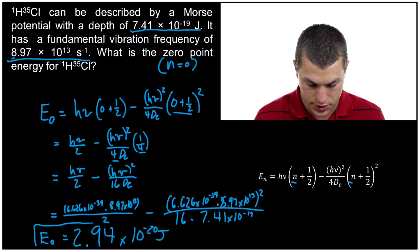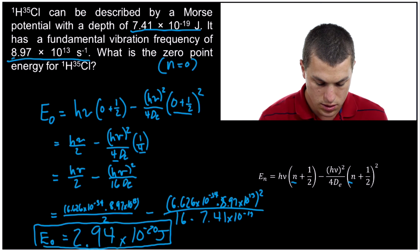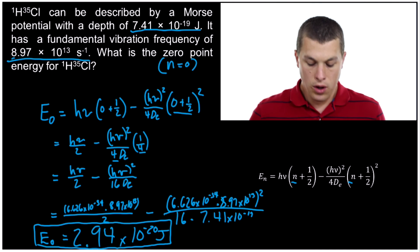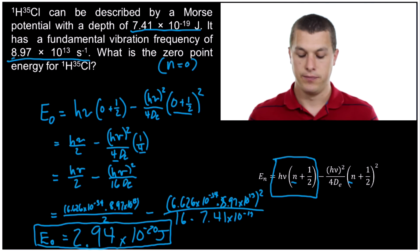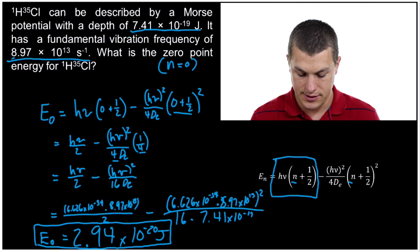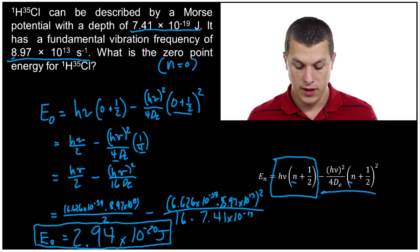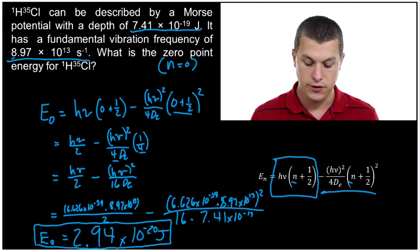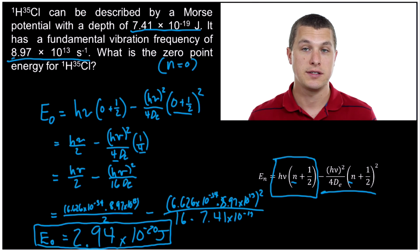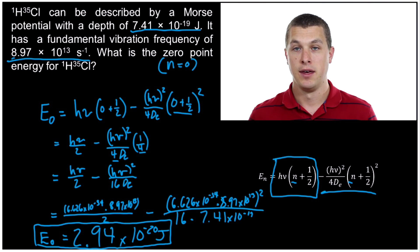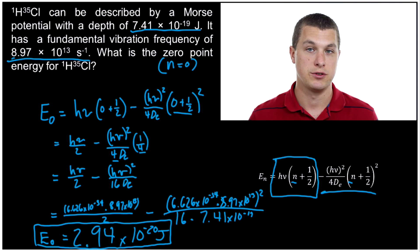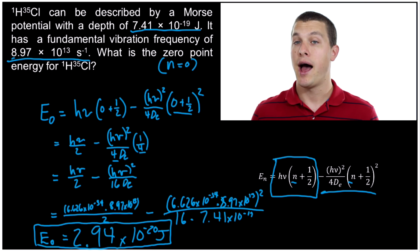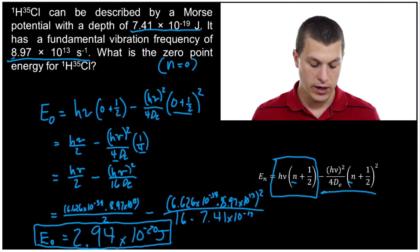That's the zero point energy of HCl modeled with the Morse potential. Note that the first part of the equation is actually just the harmonic oscillator energy — the Morse potential only adds the second term, which adjusts the energy a bit. In this case, the second term is pretty small and doesn't change it very much, so the zero point energy isn't altered much by using the Morse potential. However, when plugging in bigger values of n for higher states, the energies vary quite a lot.